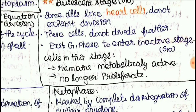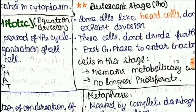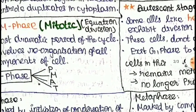The orange-colored points are key highlights. Cells in G0 stage are marked in black. These points can appear as assertion-reason type questions, sentence-based questions, and true or false questions in exams.